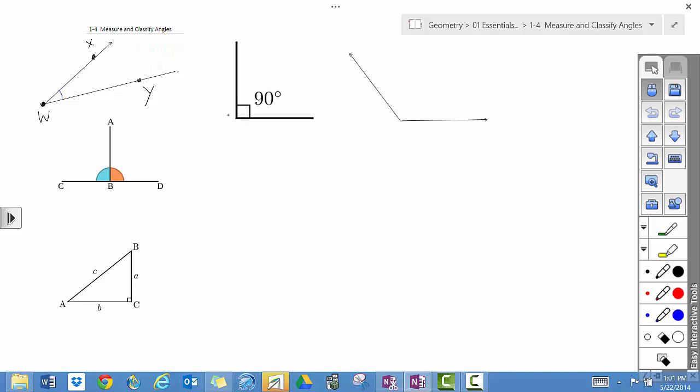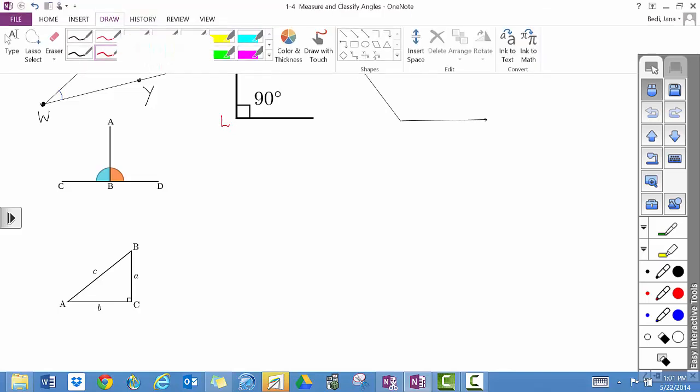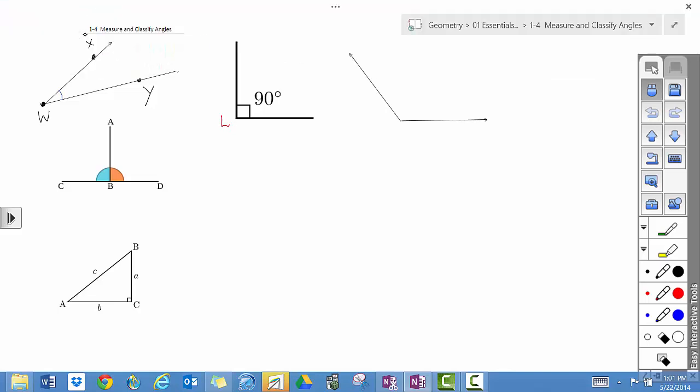Here we have an angle. Let's once again call the vertex L. So we can say angle L is a right angle, because the measure of angle L equals 90 degrees.